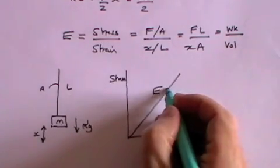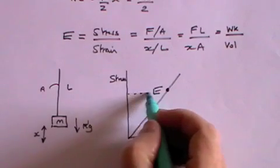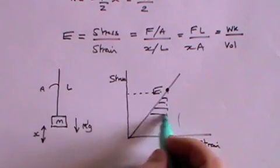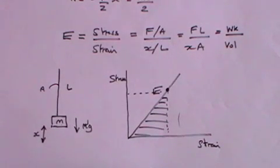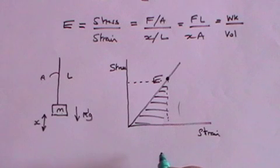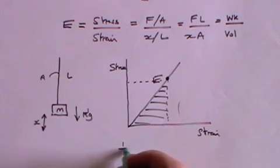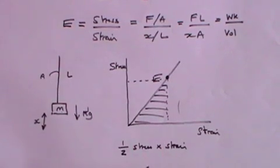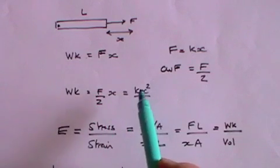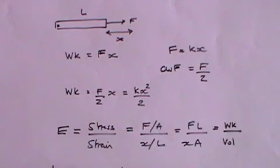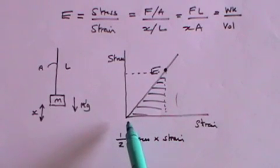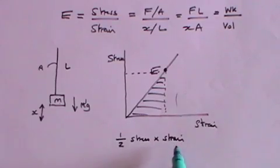For any given extension, with stress equal to force over area and strain equal to extension over original length, the potential energy stored in the stretched material is the area of the stress-strain graph. The area of that triangle is half the base times the height — that is, half the stress times the strain. This is the same principle as before when we calculated ½kx²: the energy stored in the stretched material, which would be released if you let it go, is ½ stress times strain.